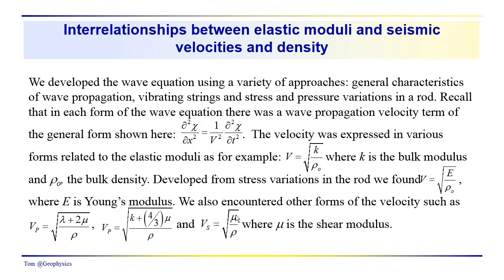We also encountered other forms of the velocity. The compressional wave velocity equals the square root of lambda plus two mu over the bulk density — note the density term refers to bulk density, not fluid or matrix density. Lambda and mu are the Lame parameters; K is the bulk modulus and mu is the shear rigidity. So the compressional wave velocity equals the square root of the bulk modulus plus four-thirds the shear rigidity, divided by the density. The shear wave velocity equals the square root of mu over rho, where mu is the shear modulus, sometimes called the shear rigidity.